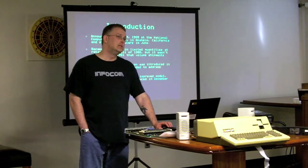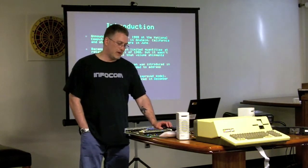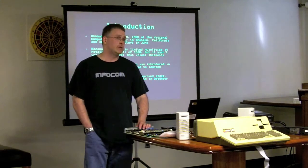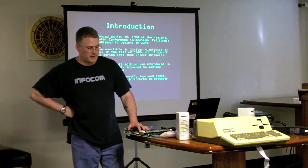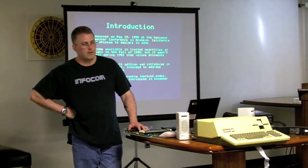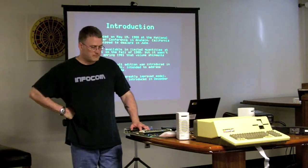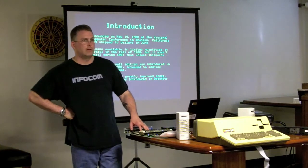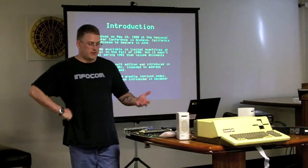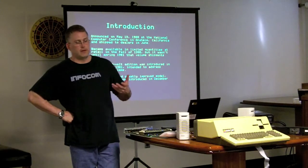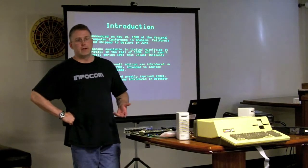The 12-volt and 5-volt designation mainly referred to the machine's memory. When the Apple III was first produced, the RAM chips were so expensive. As time went on, RAM became cheaper and easier to manufacture. You could have a 256K 5-volt Apple III that actually ran with less power than a 12-volt 128K Apple III.